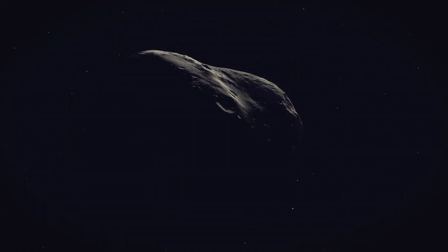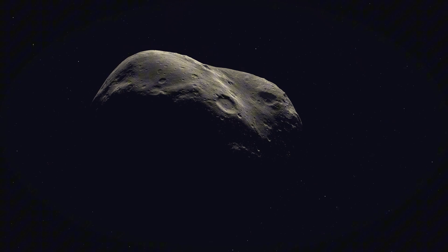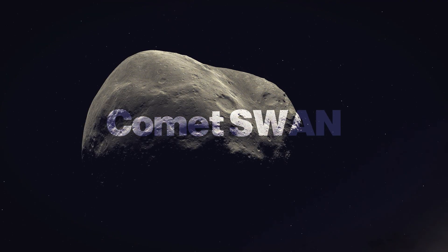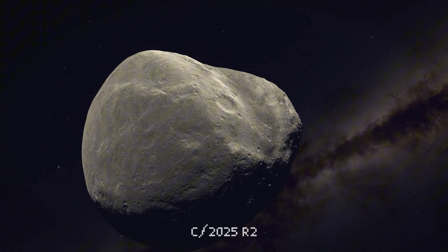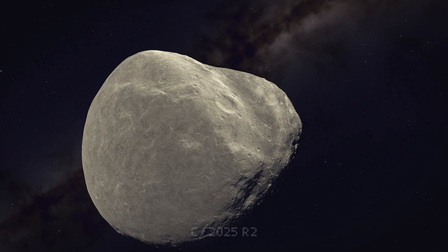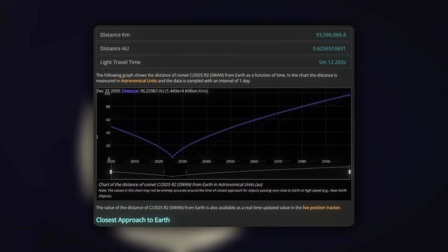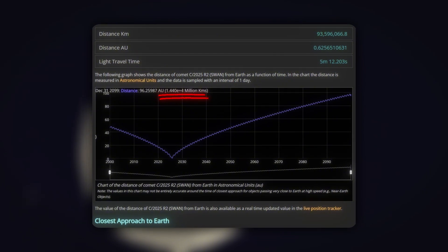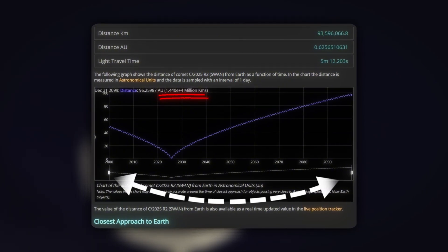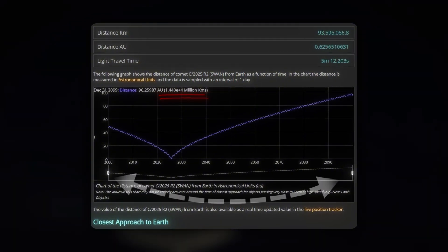A new comet was emerging from the sun's vicinity, and it was massive. Comet SWAN, officially designated C2025R2, isn't just another space visitor. It's a returning giant with an orbital period measured in thousands of years. While the exact timeline is still being calculated by astronomers, early estimates suggest this comet hasn't visited our inner solar system for many millennia.